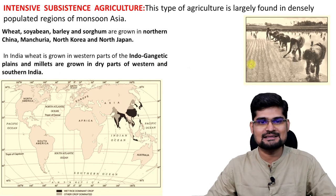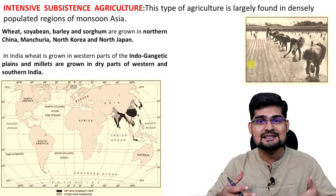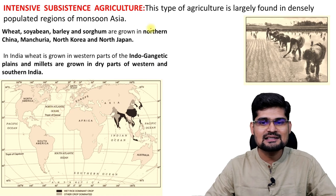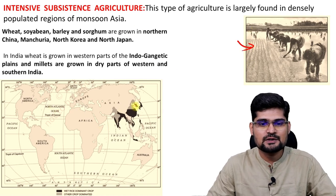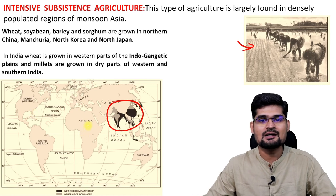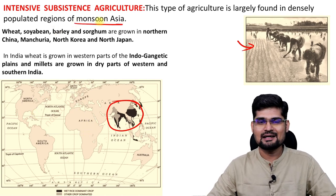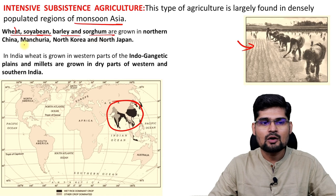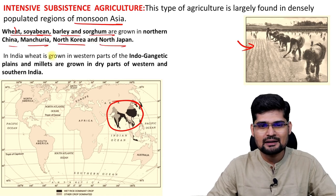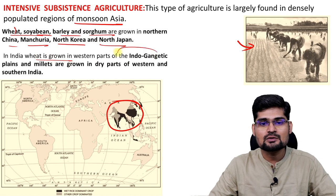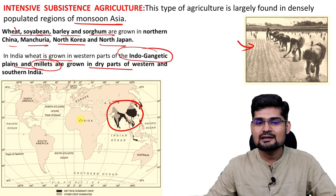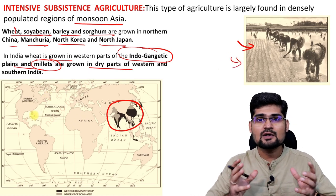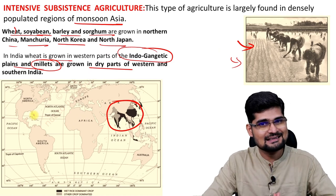Then comes intensive subsistence agriculture. The word 'intensive' means too much input of labor and resources, but for subsistence only. This kind of agriculture is prevalent mostly in South Asia and Southeast Asia — monsoon Asia. Products like wheat, soybean, barley, sorghum are grown in China, Manchuria, North Korea, and North Japan. Rice and wheat are grown in the Indo-Gangetic plains and millets are grown in dry areas. These are part of intensive subsistence where you have too much labor input and small land holding size.